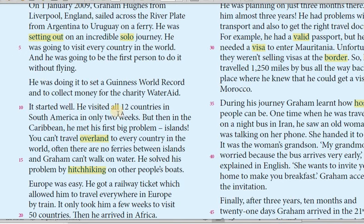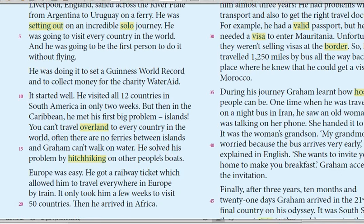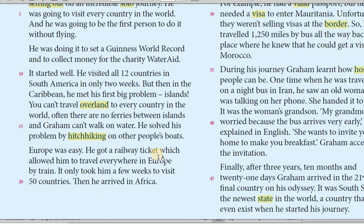It started well. He visited all 12 countries in South America in only two weeks. But then in the Caribbean he met his first big problem — islands. You can't travel overland to every country in the world. Often there are no ferries between islands and Graham can't walk on water. He solved his problem by hitchhiking on other people's boats. Europe was easy. He got a railway ticket which allowed him to travel everywhere in Europe by train. It only took him a few weeks to visit 50 countries.